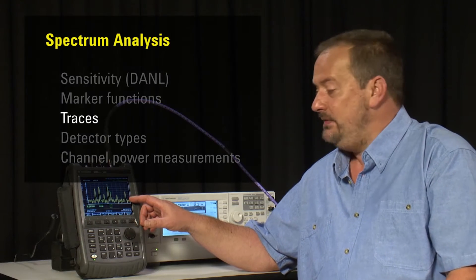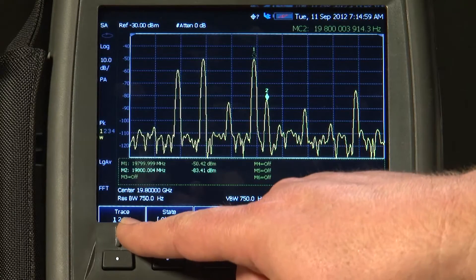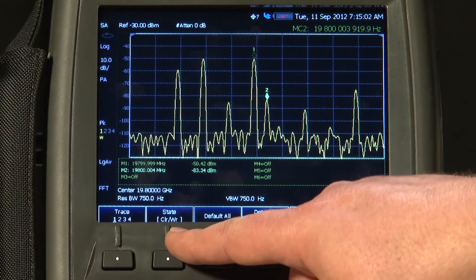And just like on a benchtop analyzer, we have multiple traces. If I press the Trace button, you will see we are currently viewing Trace 1, which is the yellow trace set to Clear Right.